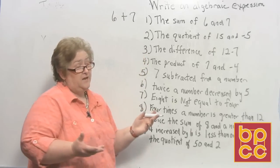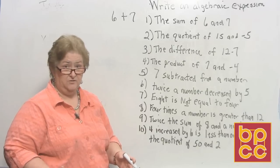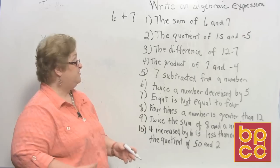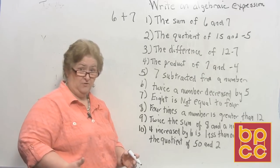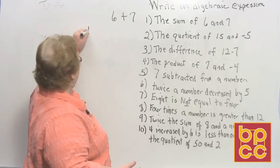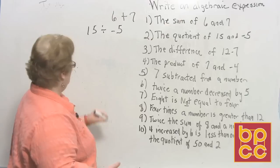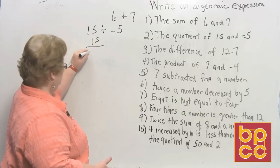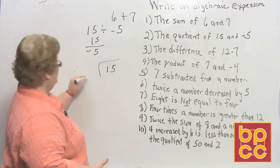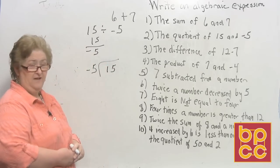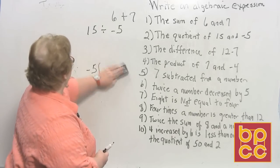On our next one, unless you know what quotient means, we're going to be stuck. Quotient is just a word for division — it's the answer to a division problem. So the quotient of 15 and negative 5 can be written as 15 divided by negative 5, or as a fraction with 15 on top. Any of those would be fine.